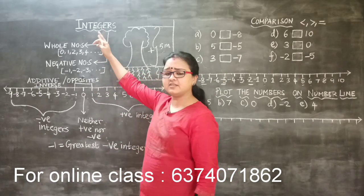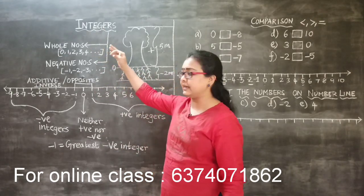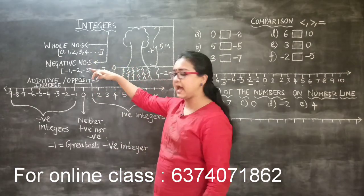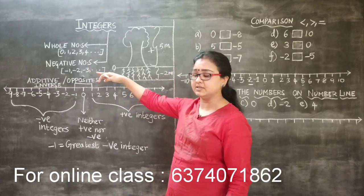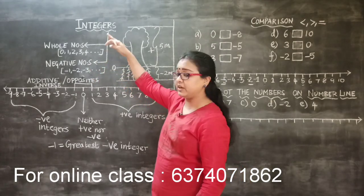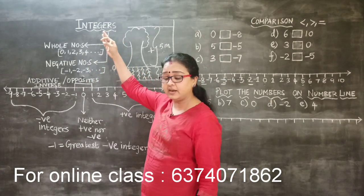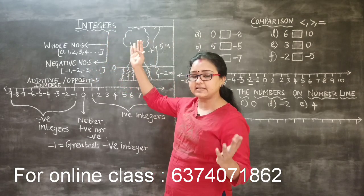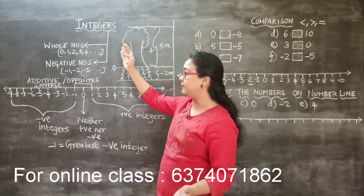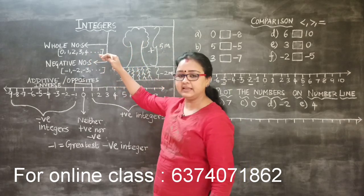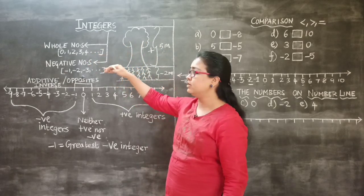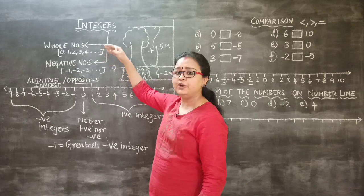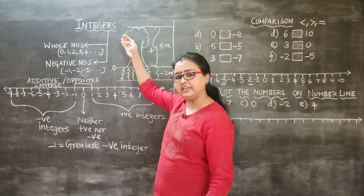Integers are the biggest collection of whole numbers and negative numbers. These two together are known as integers.